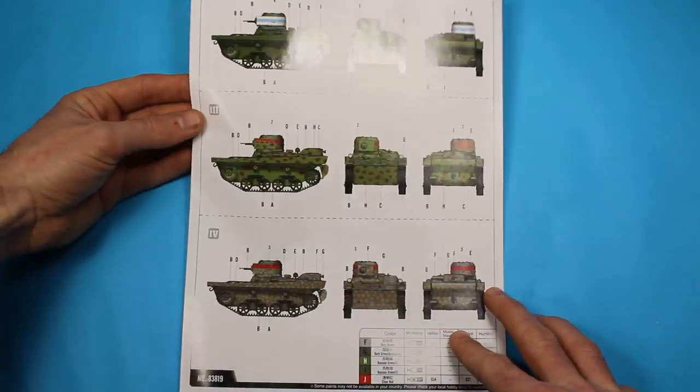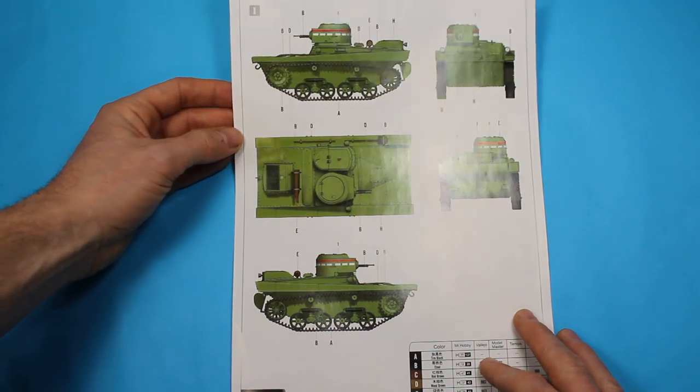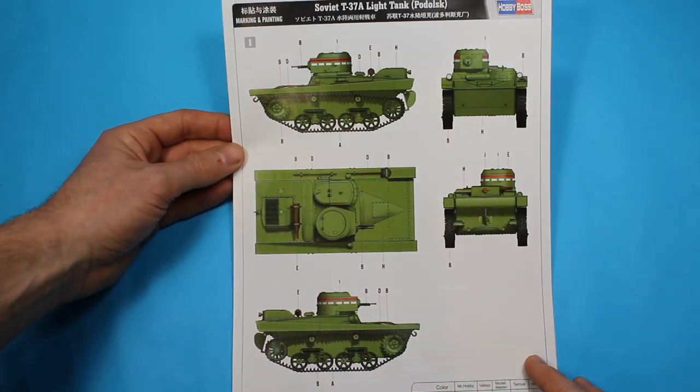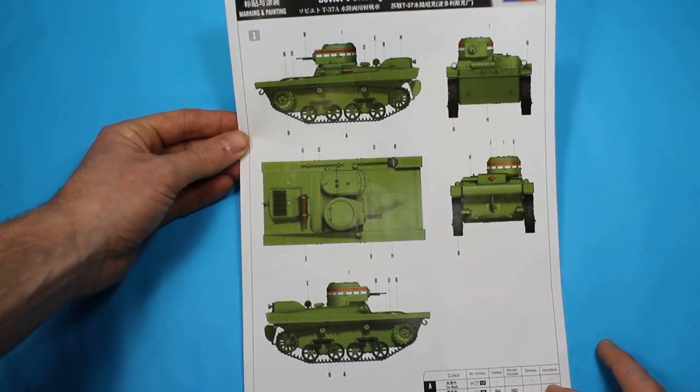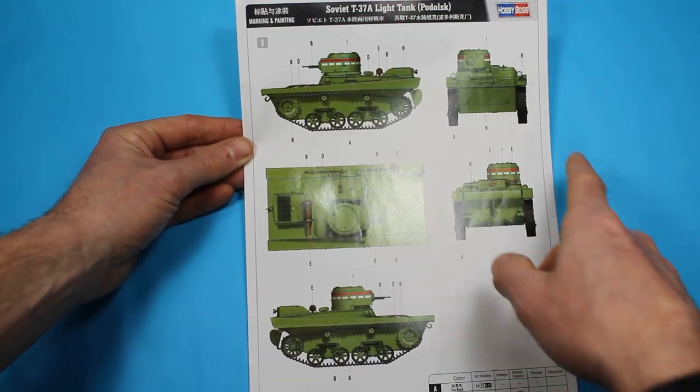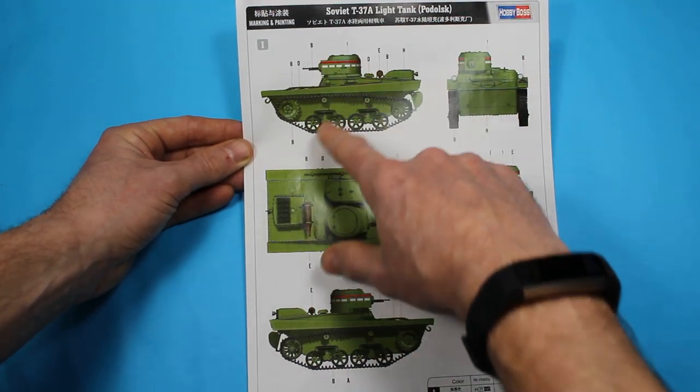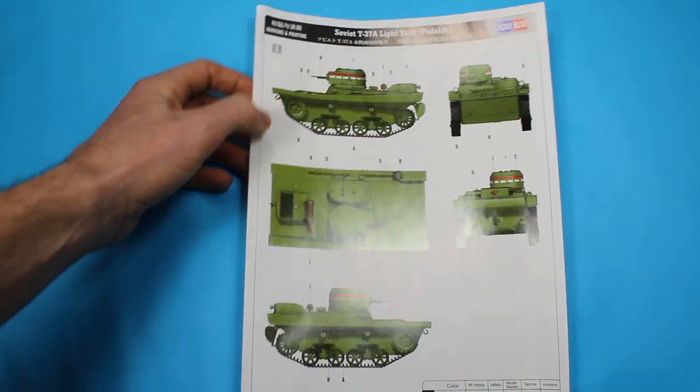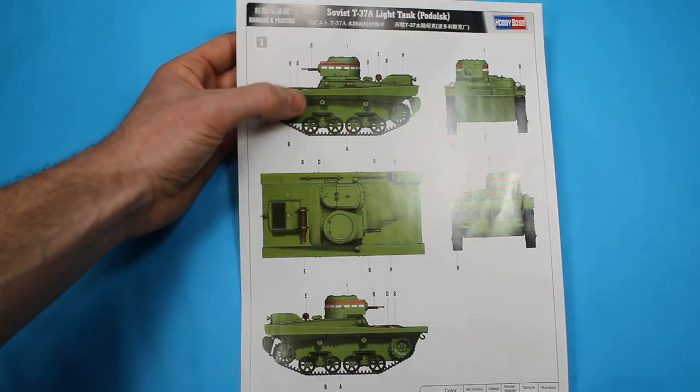For the marking schemes, there's a bit of glare, but we actually get four options. The first is a Soviet one with decal placement pretty much all around the turret, with the iconic Soviet early war and pre-war markings.